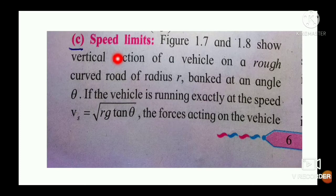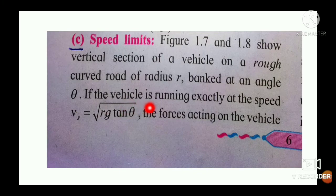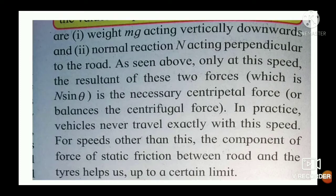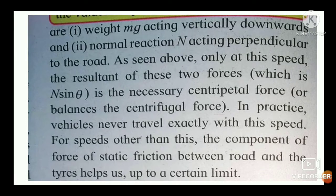In practical cases, all vehicles do not move at this constant speed, so we consider speed limits — that is, the maximum speed and minimum speed. Figures 1.7 and 1.8 in your book show the vertical section of a vehicle on a rough curved road of radius R, banked at angle θ. If the vehicle runs exactly at Vs = √(Rg tan θ), the forces acting are weight Mg vertically downward and normal reaction N perpendicular to the road surface, with N sin θ supplying the necessary centripetal force.